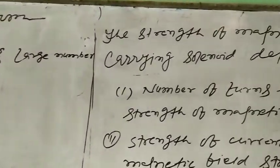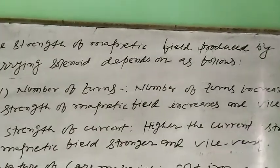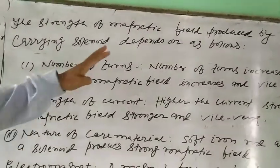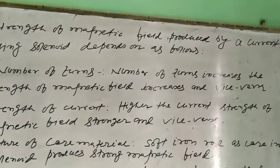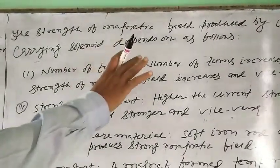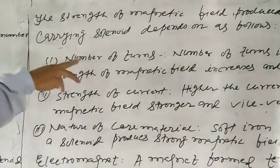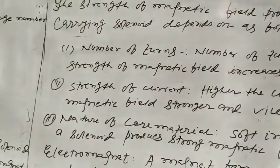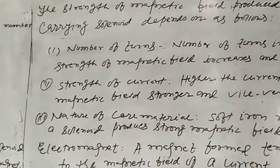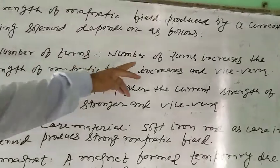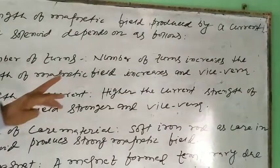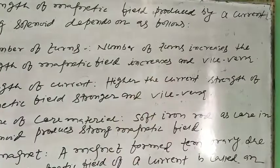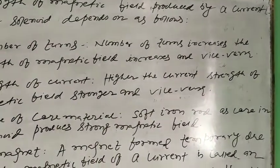The strength of the magnetic field produced by a current carrying solenoid depends on the following factors. First, the number of turns. If the number of turns increases, the strength of the magnetic field increases, and vice versa — if the number of turns decreases, the strength of the magnetic field decreases.